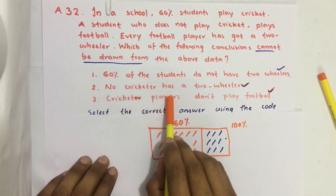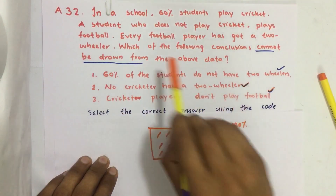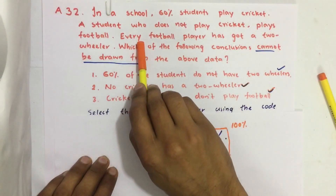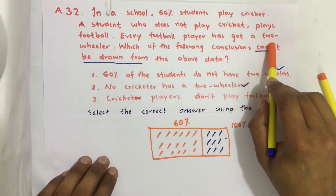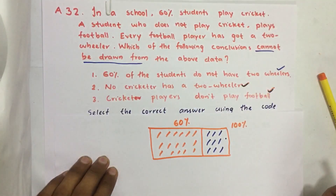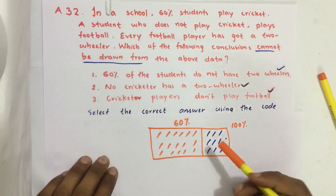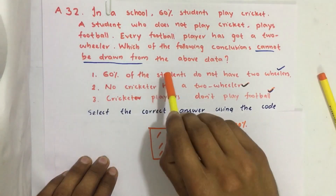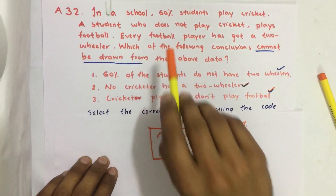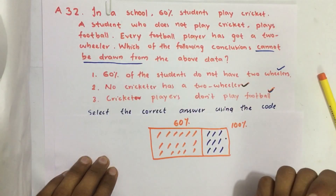The second conclusion is: no cricketer has a two-wheeler. Here it is only mentioned that every football player has got a two-wheeler. Nothing is mentioned about cricket players. So we can't conclude that only football players have got a two-wheeler, or that no cricketer has one.